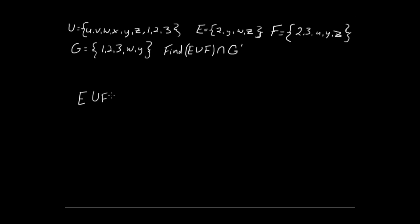So E union F is going to equal, and what's in E: 2, Y, W, and Z, and what's in F: 2, 3, U, Y. I want to start with the numbers. Okay, so they both contain 2, and F contains 3, so we're going to add that one as well. And then we'll go with the letters, and E contains Y, W, and Z, and F contains U, Y, and Z. So we'll put U, Y, W, and Z. So now we have E union F, which contains all of the elements in E and all of the elements in F without repeating any of the elements.